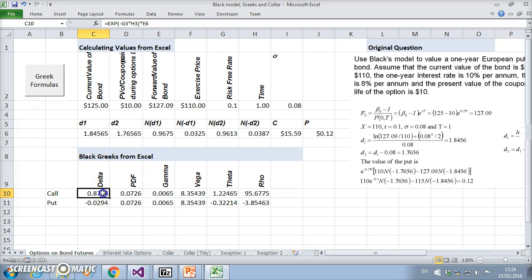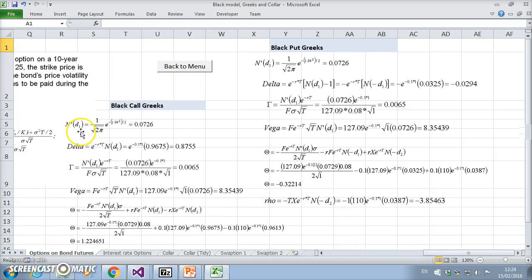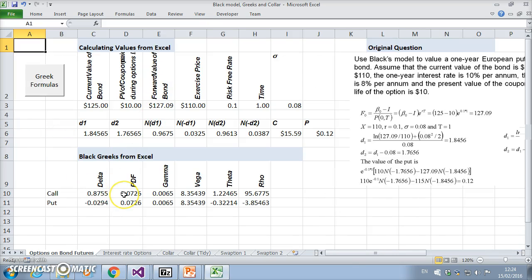I've also used the estimated probability density function, N'(d₁). Just to look at delta here for a moment, it's e^(-rt)·N(d₁). The gamma uses this probability density function. To estimate the PDF, it's 1 over √(2π) times e^(-d₁²/2), and we get this value of 0.0726.